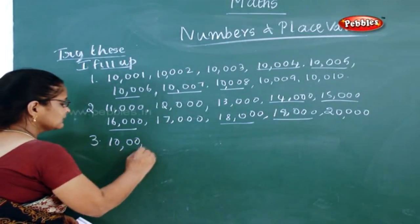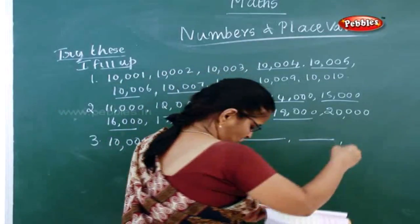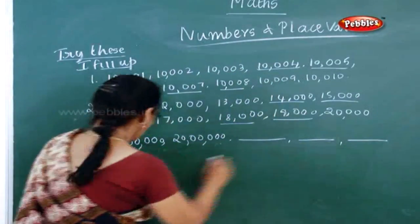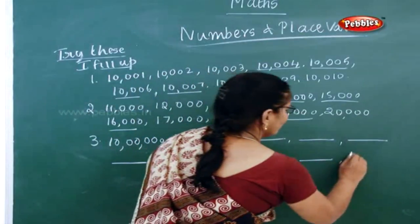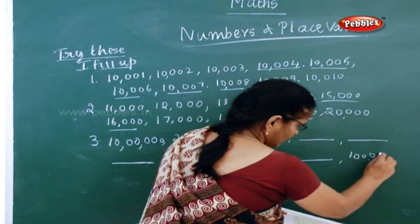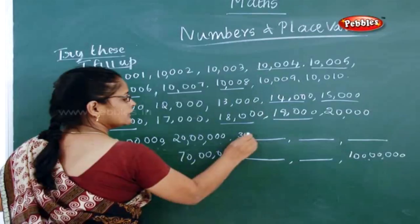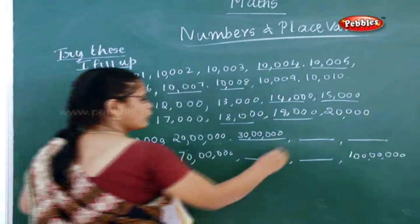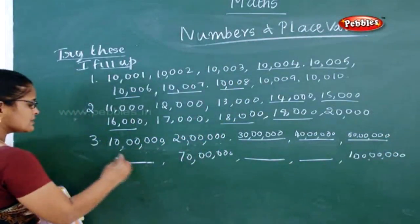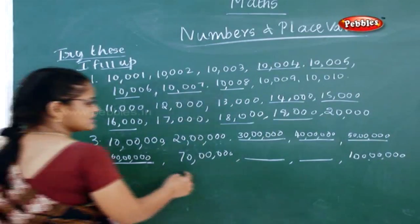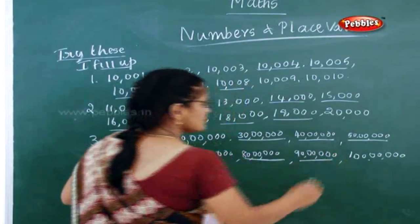See third sum: ten lakhs, twenty lakhs, then we have given a dash, next dash, seventy lakhs, then dash, eighty lakhs, then one crore they have given. Now you fill it up. So here it is ten lakhs, twenty lakhs. Next is thirty lakhs, then forty lakhs, fifty lakhs, sixty lakhs. Then seventy is given. Next after seventy, it is eighty lakhs. The next one is ninety lakhs. So this is how you have to find it.